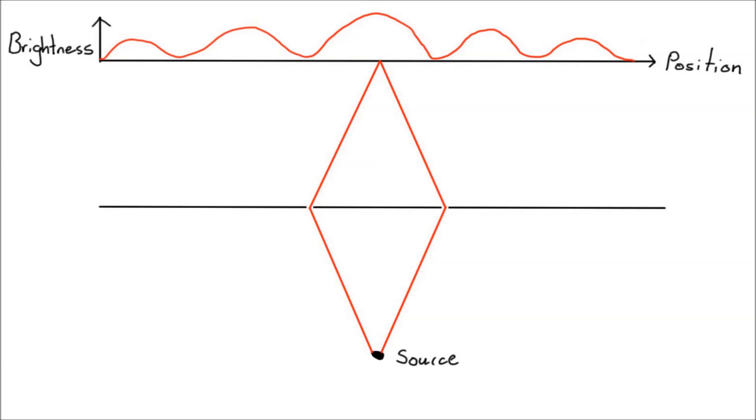What if we turn down the brightness so that only one photon of light is being emitted at a time? Well, we'll record the positions where the photons collide with the detector over time, and we'll plot a graph of the result.